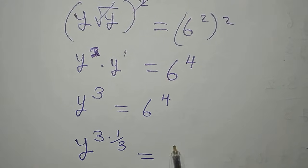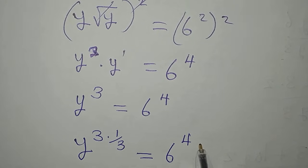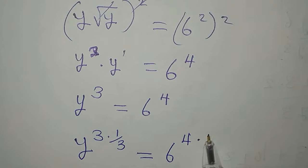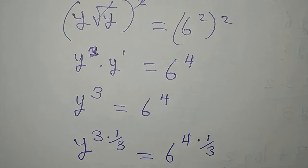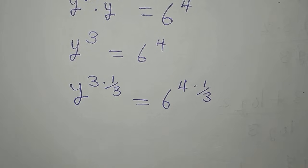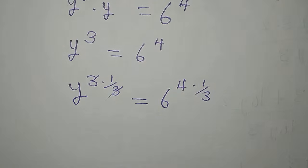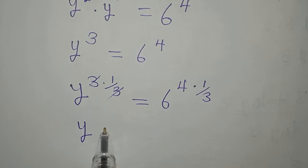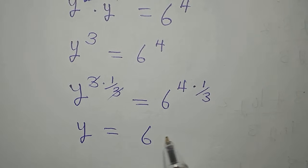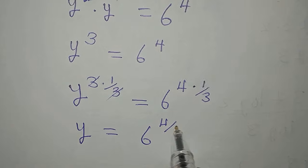Then it reflects on the right. 6 to the power of 4, then to the power of 1 over 3. From here, we can have this cancelled out. Then y is alone and is equal to 6 to the power of 4 over 3.